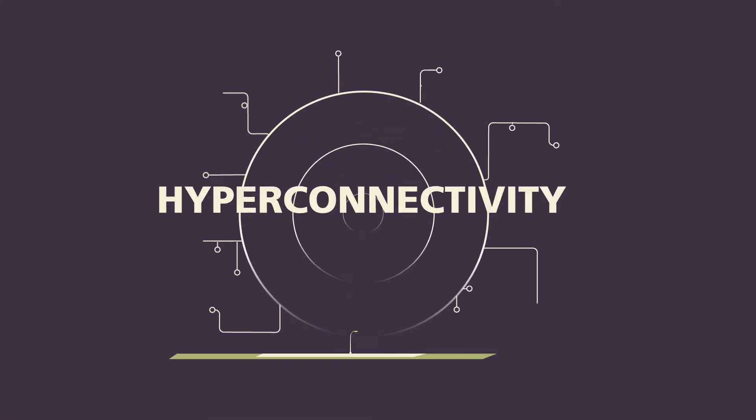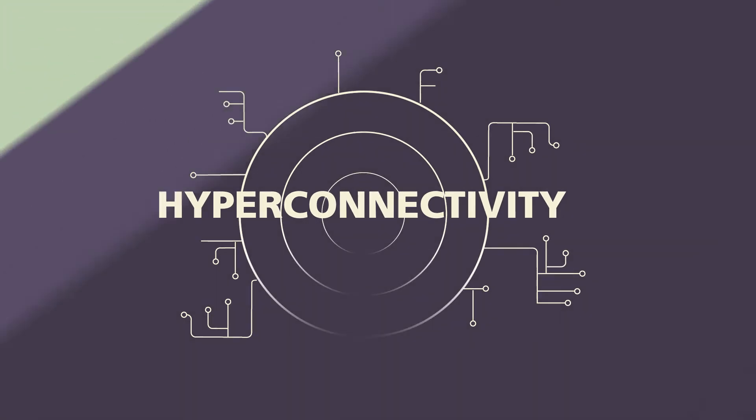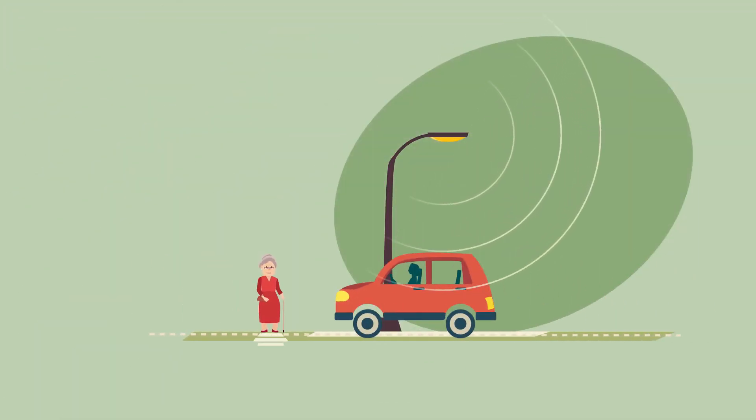Public lighting will be hyper-connected. The poles for public lighting will receive traffic information and they will send them to vehicles, regulating our roads and making them safer.